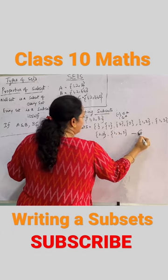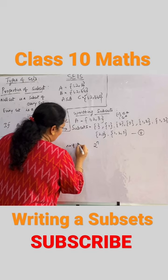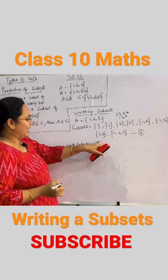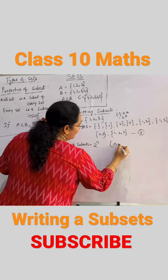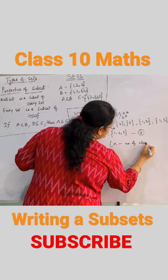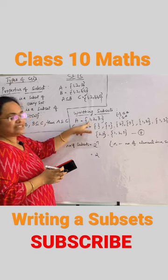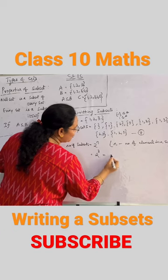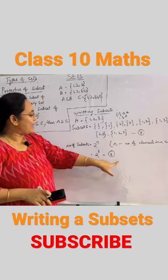We got 8 subsets. Number of subsets equals 2 power n, where n is the number of elements in a set. How many elements do we have? Three elements. 2 cubed, right? What is 2 cubed? 8. It is matching.